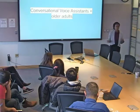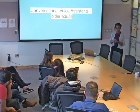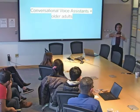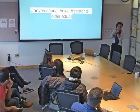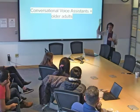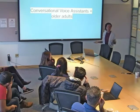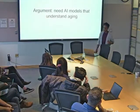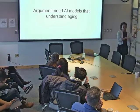My argument here is that we need AI models that understand aging — and I want to point out that aging and disability are different components of accessibility. Someone can be an older adult with a disability, but not necessarily. Here I'm talking about the nuances of aging, life transitions, societal transitions, and role transitions. To start, let me mention Eliza — the OG of conversational agents, one of the first chatbots that could fool people into thinking it was human, created in the 1960s.